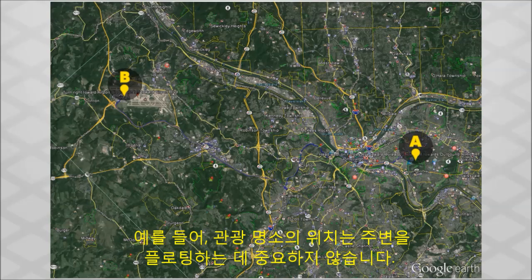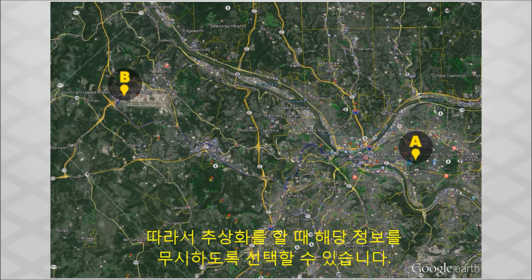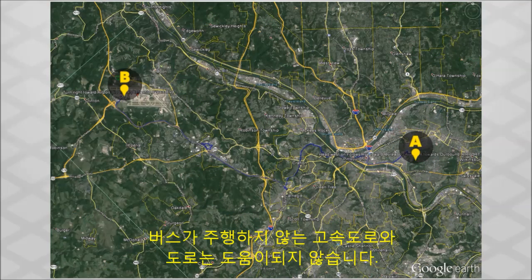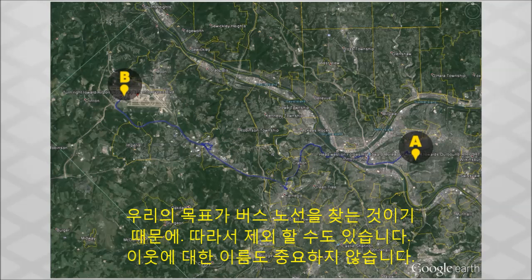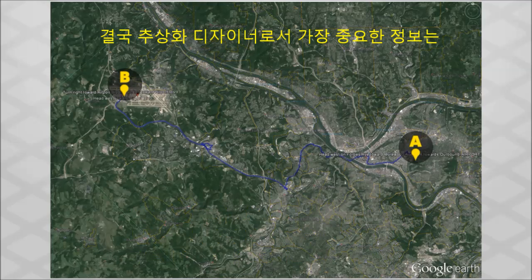For instance, the location of tourist attractions is not important for plotting a route. So, when building your abstraction, you might choose to ignore that information. Highways and streets that buses do not travel along are also not helpful, since our goal is to find a bus route, so you might choose to exclude those. Names of neighborhoods are also not important for this task.